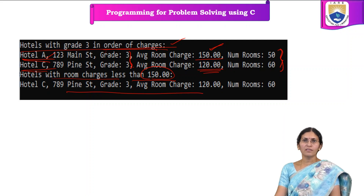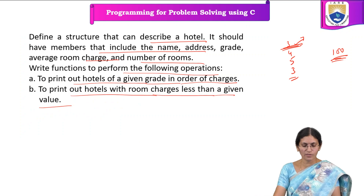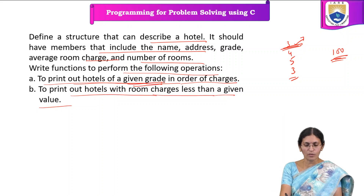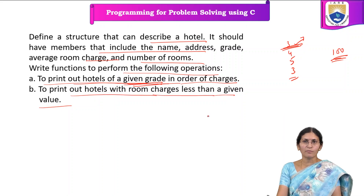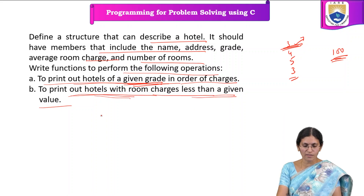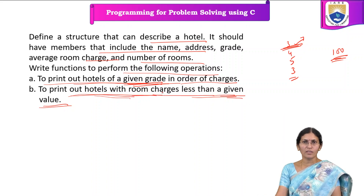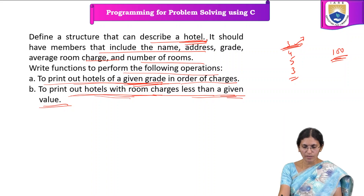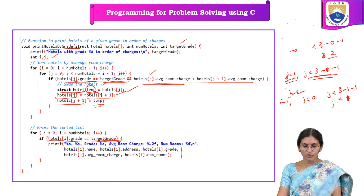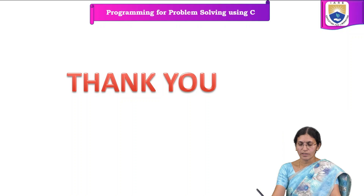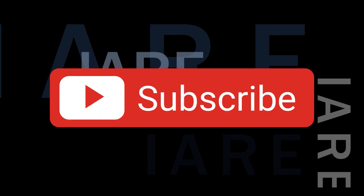In this way, we can write programs based on structures. We have written a program to print out hotels of a given grade in the order of charges — hotels of a particular grade are selected and displayed in decreasing order of their charges. We have also displayed hotels with room charges less than a given value. In the next video lecture, we will discuss some more concepts of C programming. Until then, thank you — like, share and subscribe, and hit the bell icon for more updates.